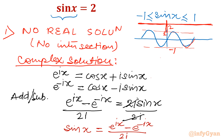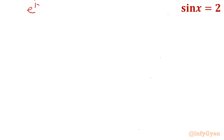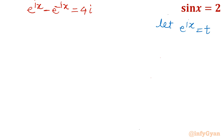So sin x is equal to e power ix minus e power minus ix over 2i. Now I will write sin x equal to 2, so that means this expression is equal to 2. Multiply both sides by 2i to get e power ix minus e power minus ix equal to 4i. Now I will introduce a substitution: e power ix equal to t. Once e power ix equals t, then e power minus ix would be 1 over t, by the exponent property. I will write this equation as t minus 1 over t equal to 4i, and I will call this equation number 1.